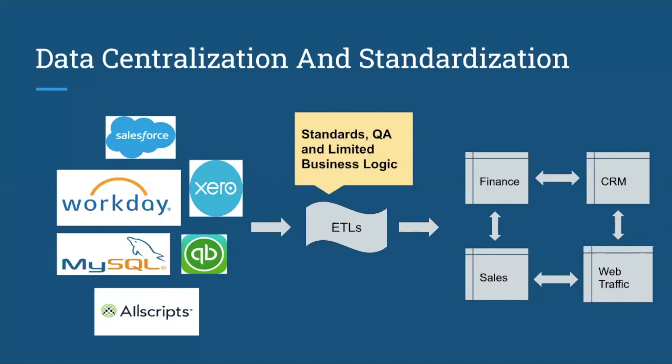Generally what we do is take something called an ETL, which essentially pulls out all that data — extracts it, that's what the E is for — it performs some sort of limited business logic on it, that's the transformation part, and then loads it into the data warehouse, thus the L. This whole process also does something else: you can start connecting all of this data together — your finance data to your web traffic data to your sales data, etc. That's generally the goal of a data warehouse: to get all of your data from all of these different applications into one location.